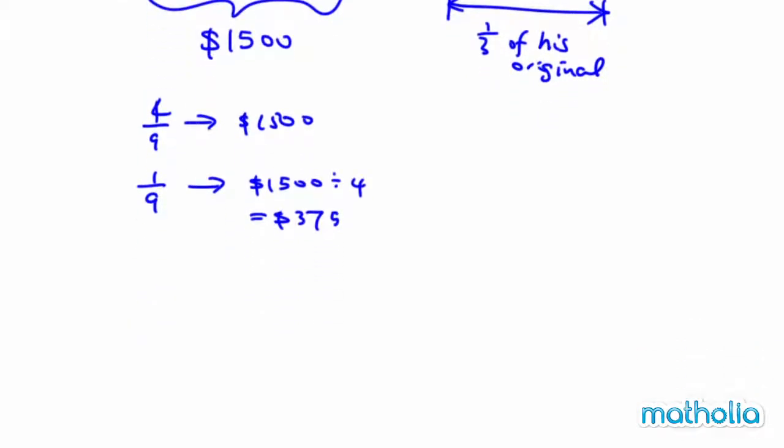So, I can find the original, which is 9 out of 9 parts. Or 9 units. Original amount will be 9 multiplied by 375, and this will give me 3,375.